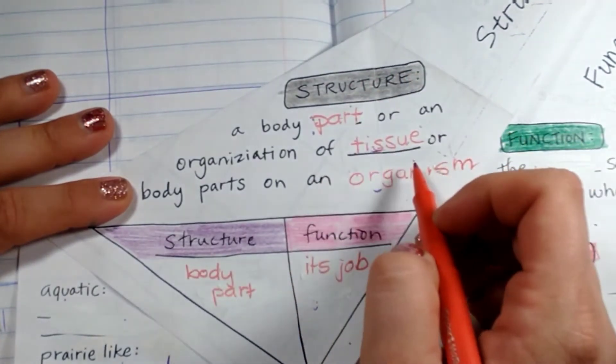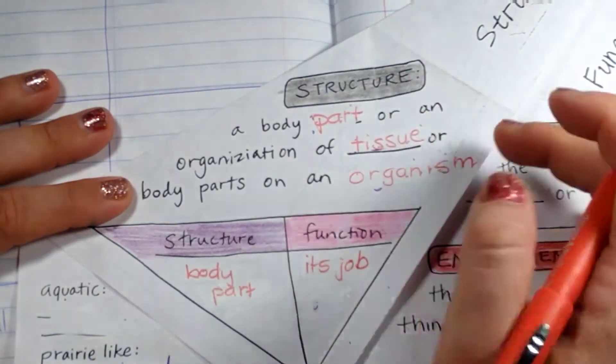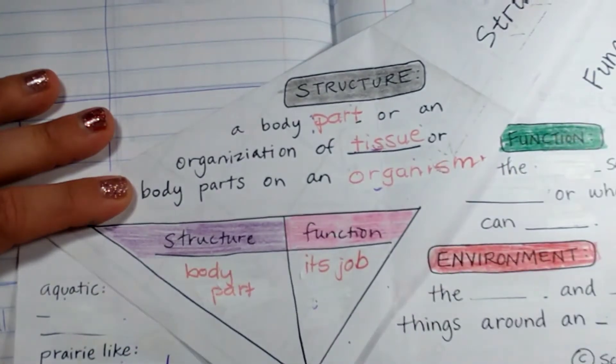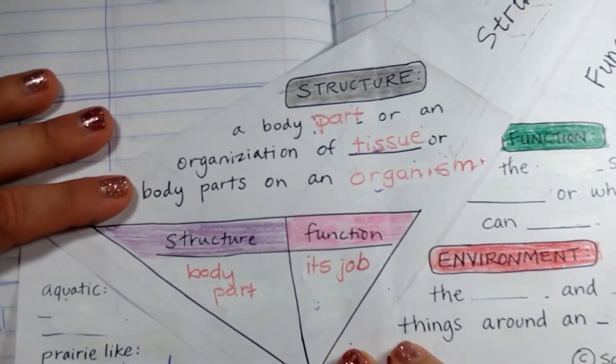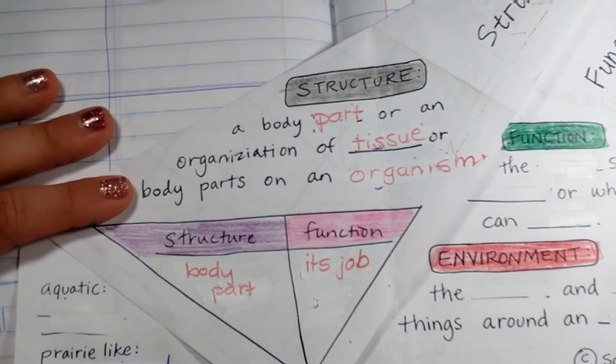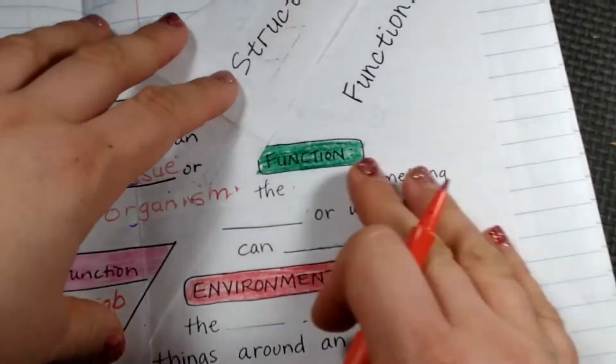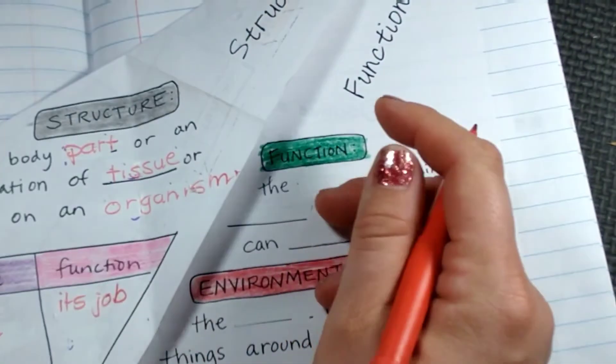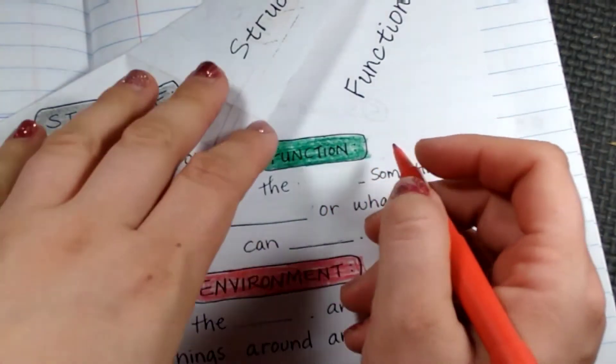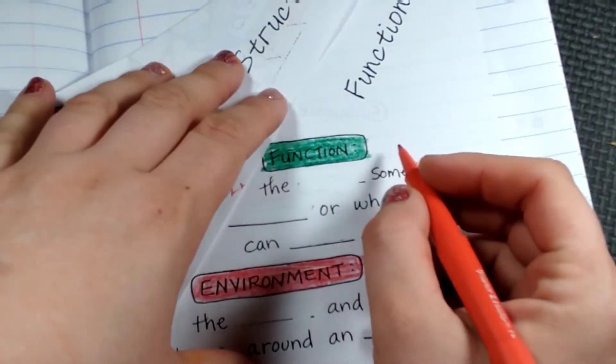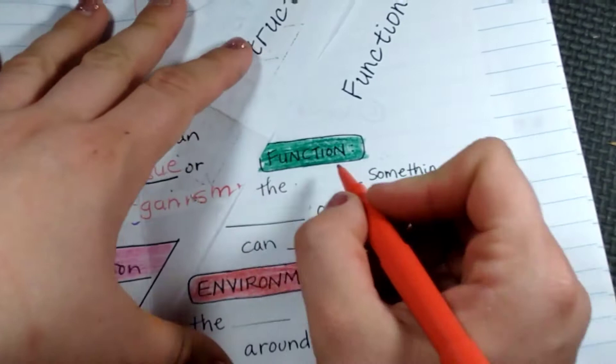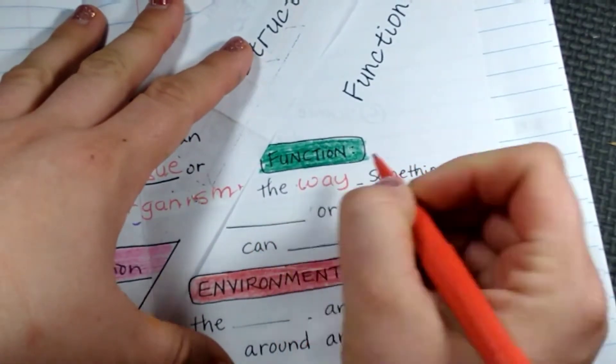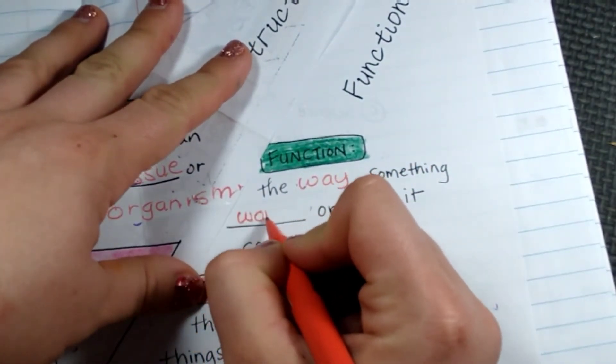So a structure is a body part. It is something that is created that is an adaptation. Now, the next thing over here are the functions, which is the way something works or what it can do. What is its job?